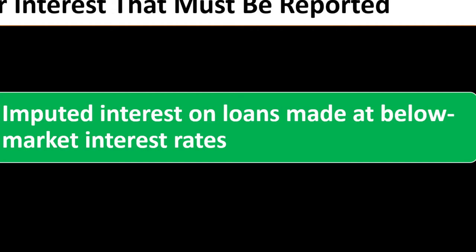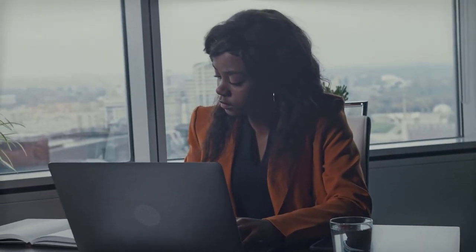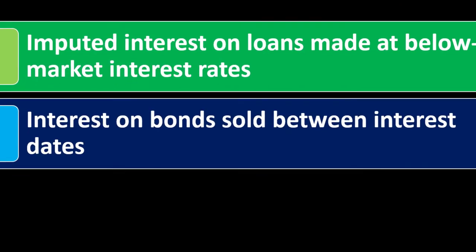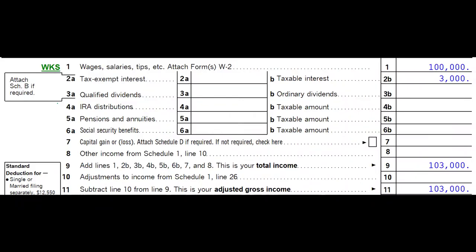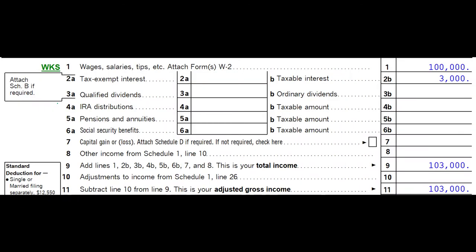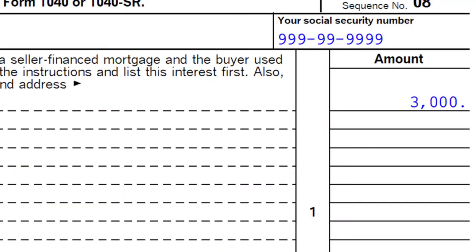If a loan was made, you'd expect it to be at market rate — the market drives interest rates in loan negotiations. If the rate is below market, you'd have to impute it, calculating what the market rate would be, so you're reporting the proper interest and paying income tax on it. Another item is interest on bonds sold between interest dates, which is a less common scenario.